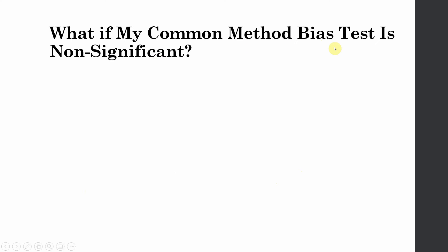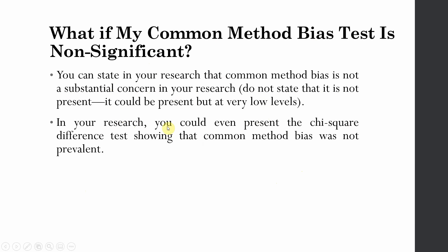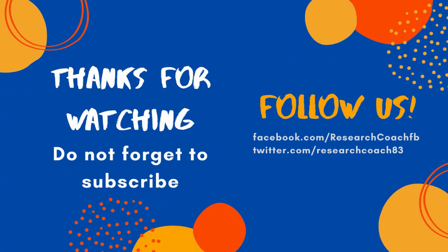If your common method bias test is insignificant, you simply need to report it. State in your research that common method bias is not a substantial concern — do not state that it is not present, as it could exist at very low levels. You can present the chi-square difference test showing common method bias was not prevalent. With a non-significant result, there is no need to include the common method latent factor in the structural analysis. I hope this video helped you understand common method bias and how to test it using AMOS. Thank you very much.